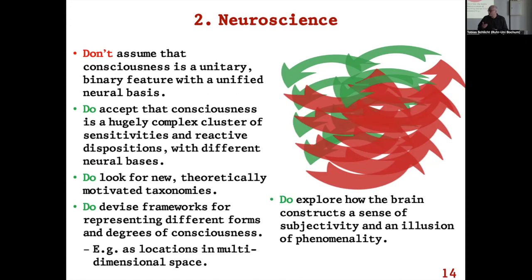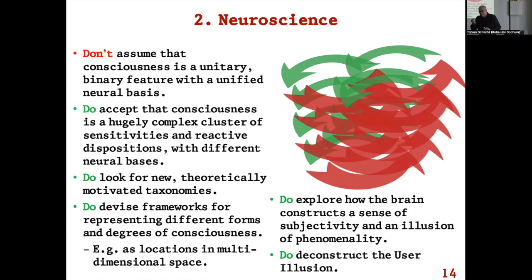Do explore how the brain constructs a sense of subjectivity and an illusion of phenomenality — works such as Michael Graziano's. And do deconstruct the user illusion: work out how it works and why it's so powerful, because it is powerful. One reason for using the term 'illusion' is to stress that this is a very compelling sense we have of there being this private world of ineffable properties. It's not just a bad bit of philosophical theory; it's built on something about human introspection that is pretty universal and powerful.